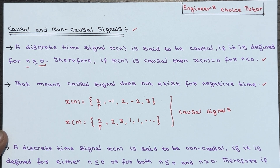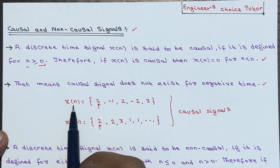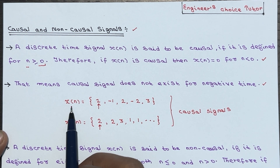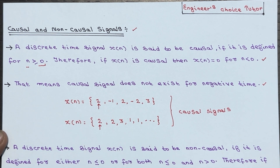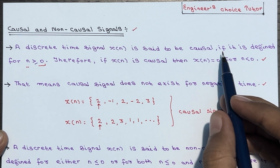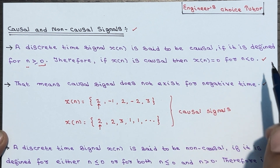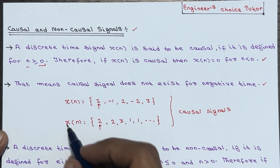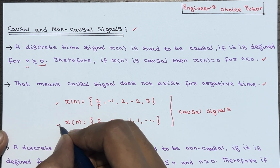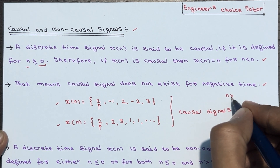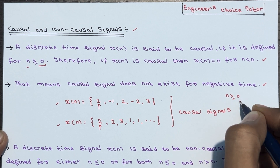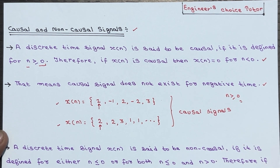Because a causal signal does not exist for negative time, and these two signals do not exist in the negative time domain. As per the definition, a signal x of n is said to be causal if it is defined for n greater than or equal to 0, and both signals satisfy that condition. So these two are examples of causal signals.